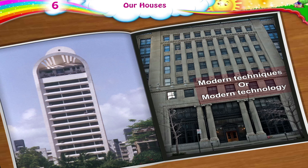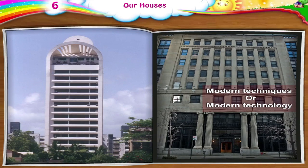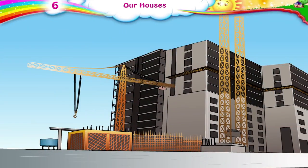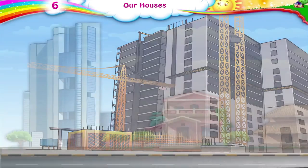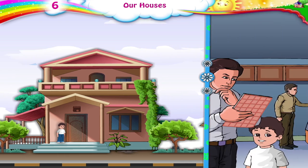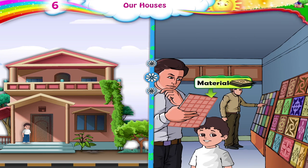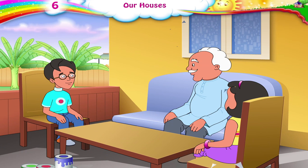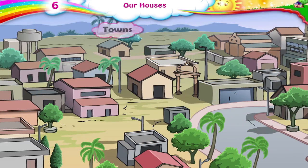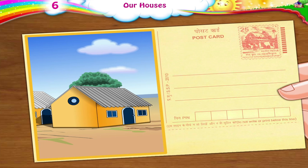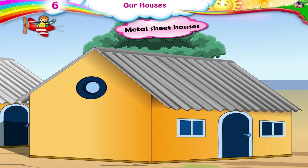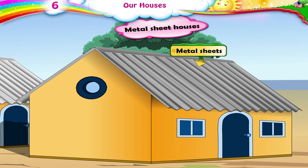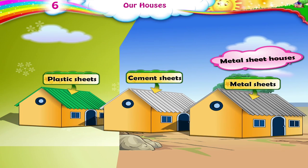Modern technology can now be used to build houses. Houses can be made strong and built quickly by using modern technology. Every person chooses a house and the material for building it to suit his or her convenience. We have different kinds of houses in our towns and cities. These are houses made of metal — metal sheet houses are built with sheets of metal. Metal, cement, or plastic sheets are used to make the roof as well.